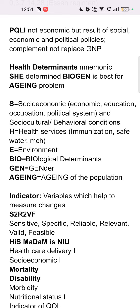From H, we have health services, which includes immunization, safe water supply, and maternal and child health. From E comes environment. From BIO comes biological determinants. From GEN comes gender. And aging comes from the aging of the population. These are the health determinants, and the mnemonic was 'She Determined Biogen Is Best For Aging Problem.'